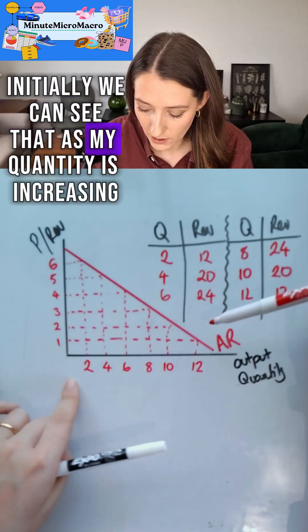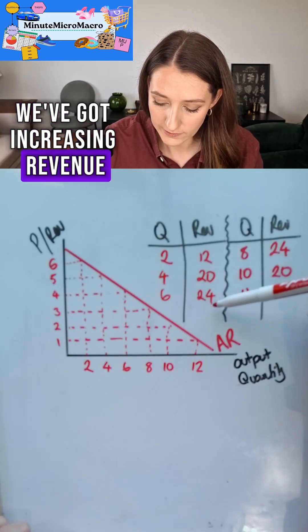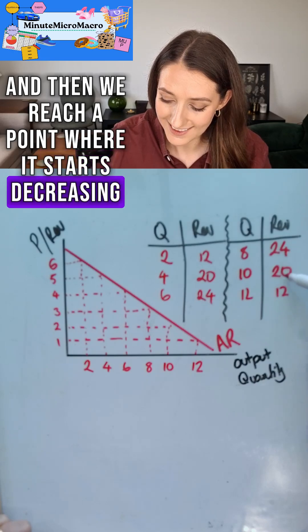Initially we can see that as my quantity is increasing, because my price is falling, we've got an increasing revenue and then we reach a point where it starts decreasing.